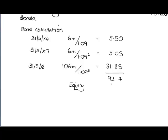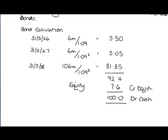Therefore, equity is the balance of 7.6 million. So we would have: debit cash 100 million, credit equity with 7.6 million, and credit the debt with 92.4 million.